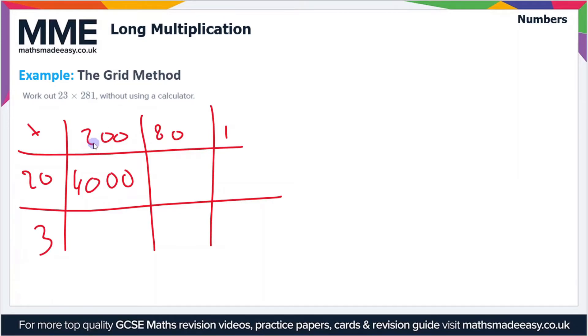20 times 200 is 4,000. Then we have 3 times 200 is 600. 20 times 80—well, 2 times 8 is 16, you can add the zeros in—gives you 1,600. And 3 times 80 is 240. 20 times 1 is 20, and 3 times 1 is 3.